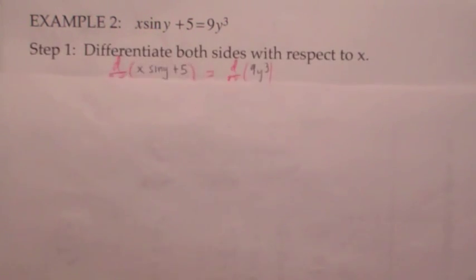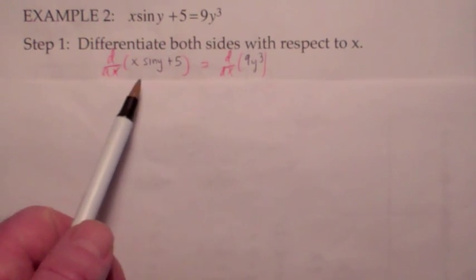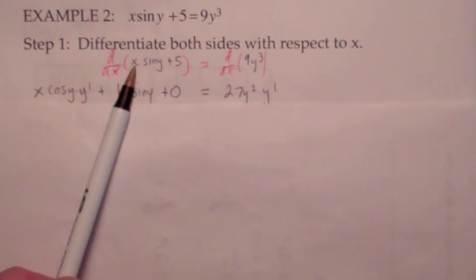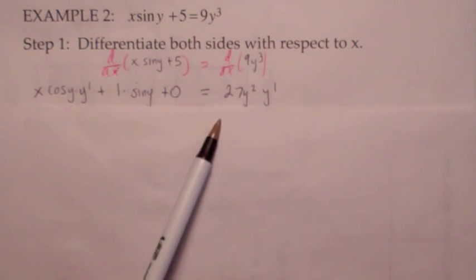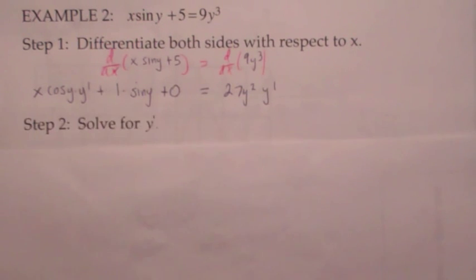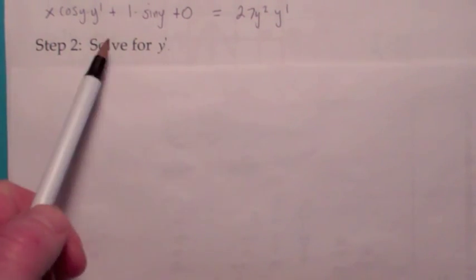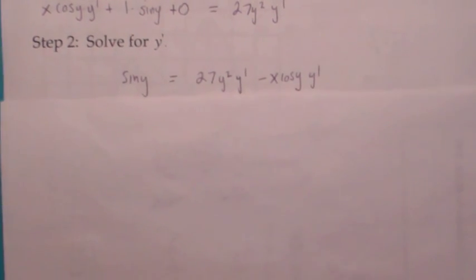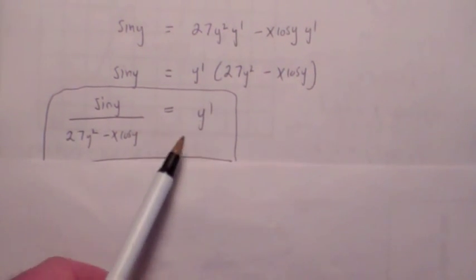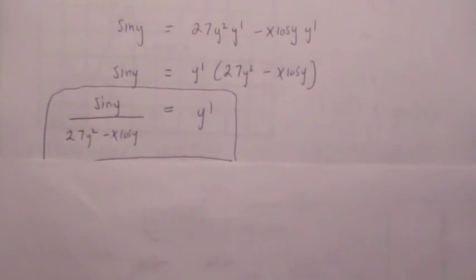Let's do another example. The process is always the same: assume the equation defines y as a differentiable function of x. Differentiating both sides with respect to x, you use the product rule on the first piece — first times the derivative of the second gives a y-prime, plus the derivative of the first times the second, plus 0. On the right side you get 27y² times y-prime. To solve for y-prime, get all y-prime terms on one side, factor out y-prime, and divide. In this case, y-prime = sin y / (27y² − x·cos y).